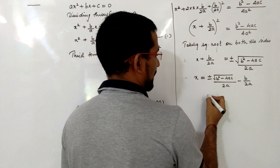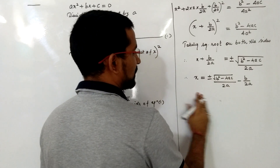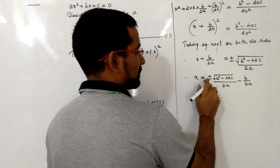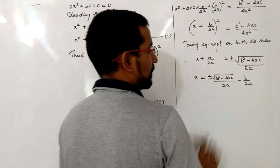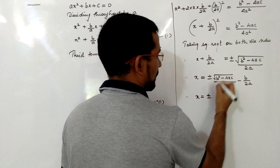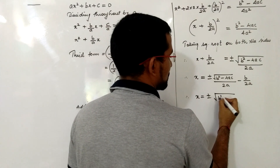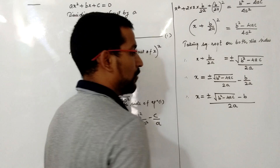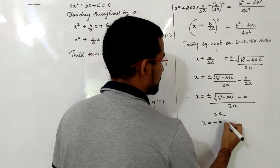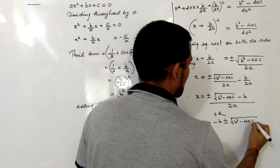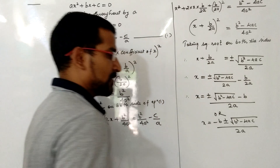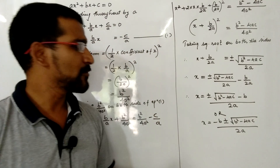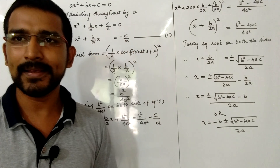So we get two values of x. Shifting −b/2a to the right hand side, and since the denominators are the same, we get x = (−b ± √(b² − 4ac)) / 2a. This is the formula we are going to use in the next method, known as the formula method. You can directly apply this formula to find the roots of any quadratic equation.